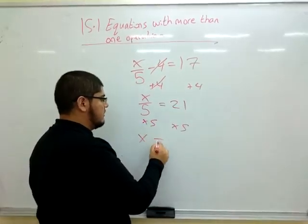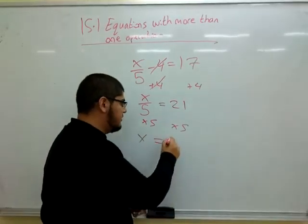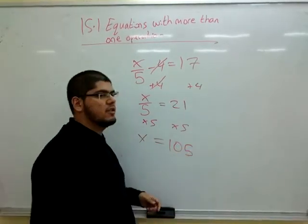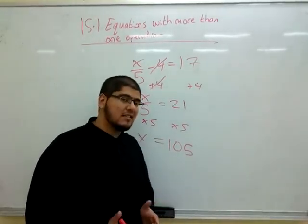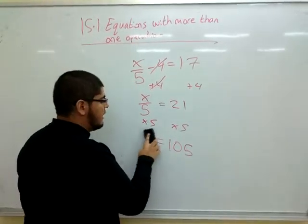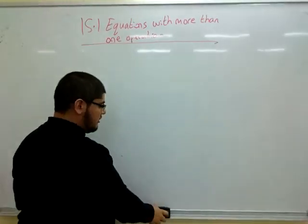So x would equal, after these two 5s cancel, 21 times 5, which is 105. Now, for the next example, our helper is going to come and show us how it's done.